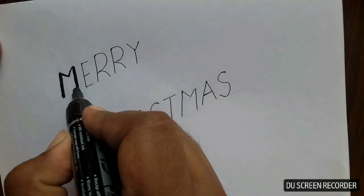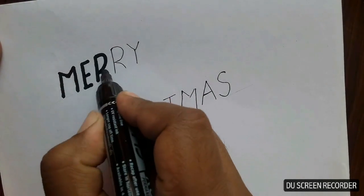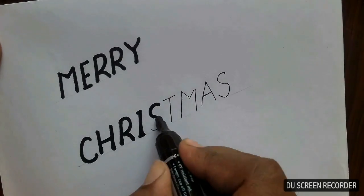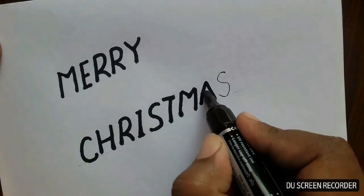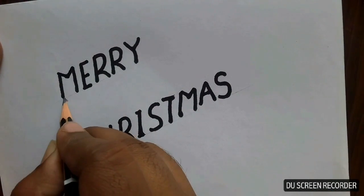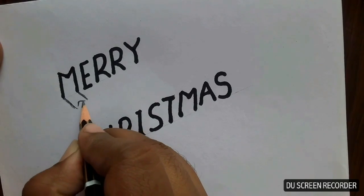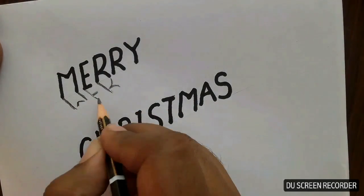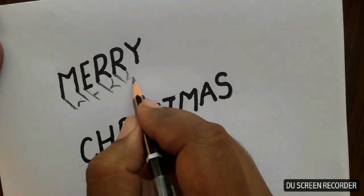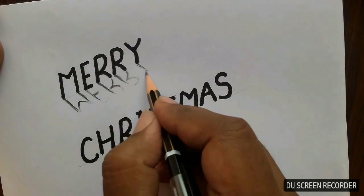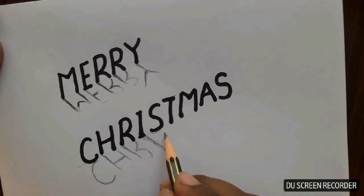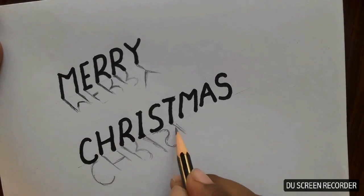On the third day of Christmas, my true love gave to me three French hens, two turtledoves, and a partridge in a pear tree. On the fourth day of Christmas, my true love gave to me four calling birds, three French hens, two turtledoves, and a partridge in a pear tree.